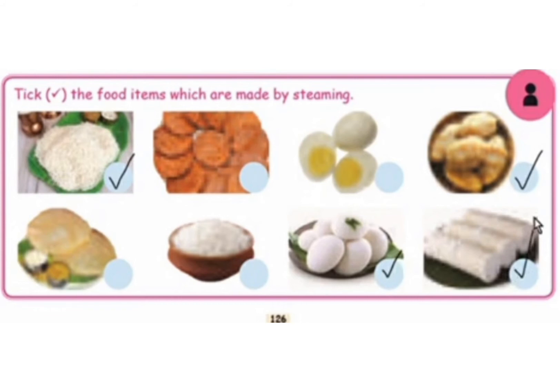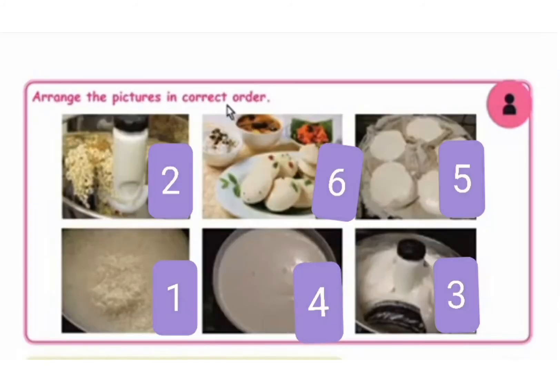Page number 106. Arrange the pictures in the correct order to show how idli is made. The fourth picture is first, the first picture is second, the sixth picture is third, the fifth picture is fourth, the third picture is fifth, and the second picture is sixth. This is the correct order.